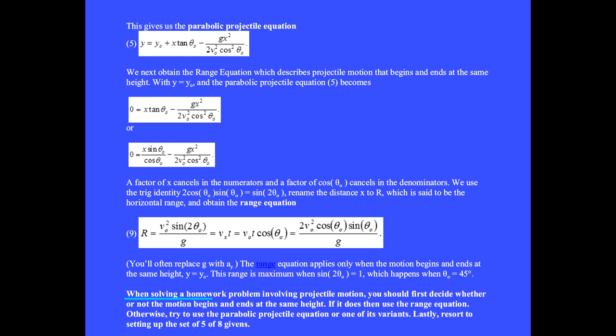When solving a homework problem involving projectile motion, you should first decide whether or not motion begins and ends at the same height. If it does, then use the range equation. Otherwise, try to use the parabolic projectile equation or one of its variants. Lastly, resort to setting up the set of 5 out of 8 givens. We'll use this equation through the year. You'll often replace g with the y component of acceleration.